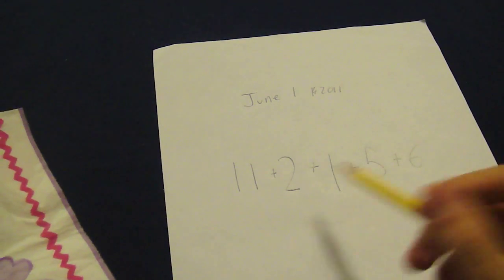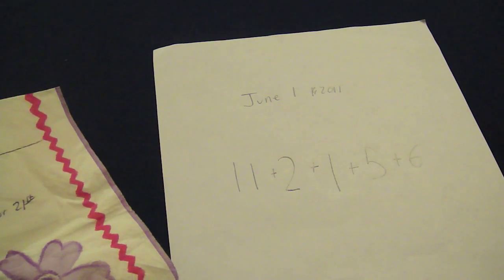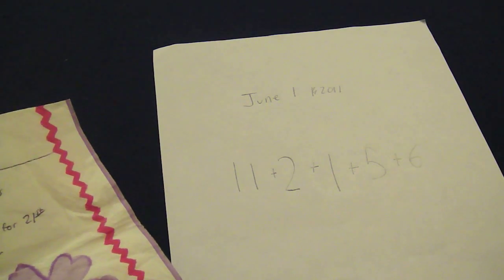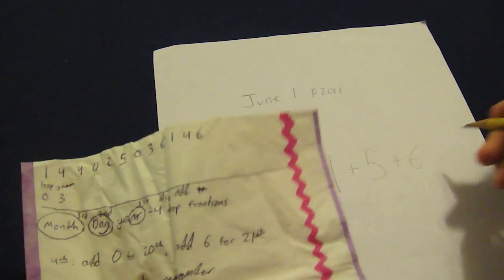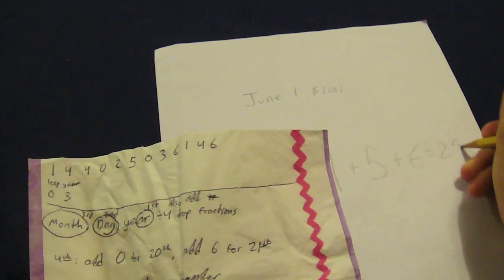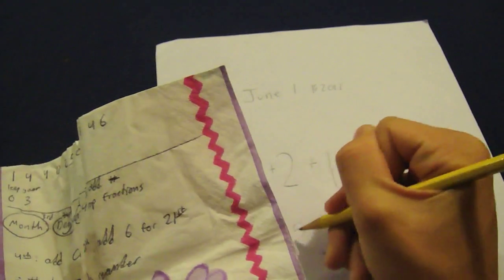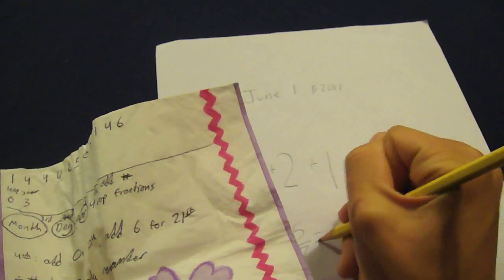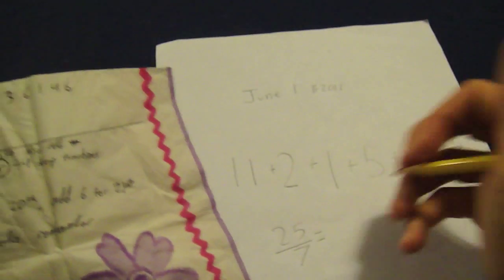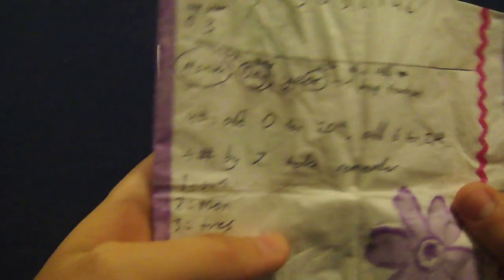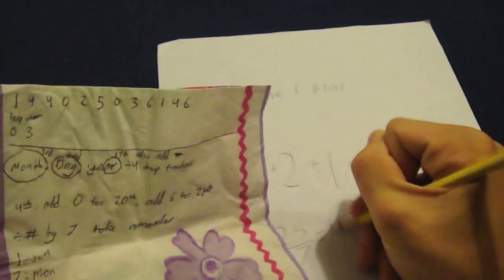Okay, so you have these 5 numbers, you add them together, and you get 25. So 25, now you're going to take that 25 and you're going to divide it by 7. And that is going to equal, you're going to take the remainder of that, and that's going to equal 4. So the remainder of that will be 4.